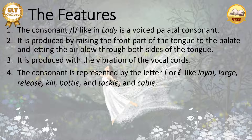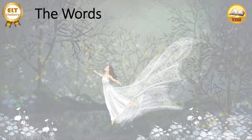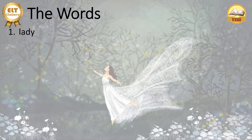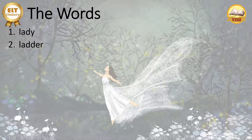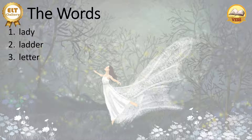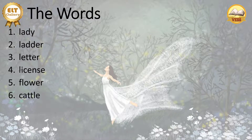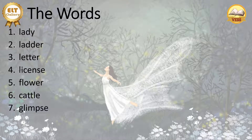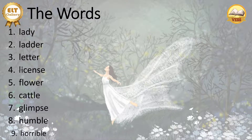Now let's have a practice with the consonant in words. Lady. Ladder. License. Flower. Cattle. Glimpse. Humble. Horrible.